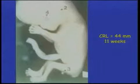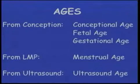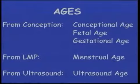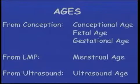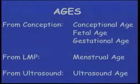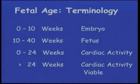By 11 weeks, when the crown rump length is 44 millimeters, you can easily see the arms, legs, face, eye, and ear. We talk about different ages for the fetus: from conception, we call it conceptual age, fetal age, or gestational age; and from the last menstrual period, menstrual age. In ultrasound, we often call it ultrasound age. When we began doing ultrasound, we started talking about gestational age based on the last menstrual period, so there's some confusion about what each of these terms means.